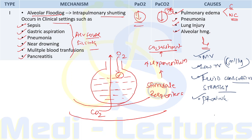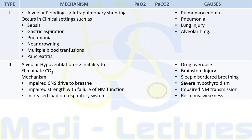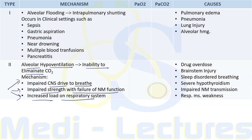Type 2 respiratory failure occurs as a consequence of alveolar hypoventilation and inability to eliminate CO2 effectively. The reason can be impaired CNS drive to breathe, impaired neuromuscular function, or increased load on the respiratory system. PaO2 will be decreased and, since CO2 cannot be washed out, PaCO2 will increase.